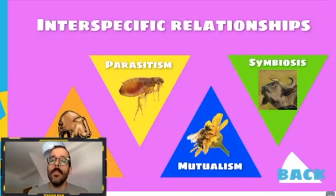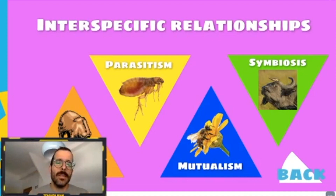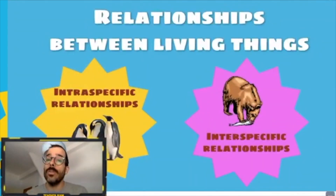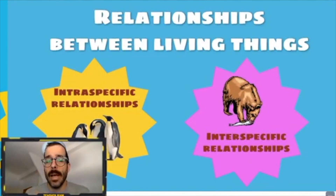So we have two equal relationships — symbiosis and mutualism — and two unequal relationships — parasitism and predation. These are the interspecific relationships; please study them. We are ending this unit and soon we will need to show what we have learned. If you have any problems, just write me an email. Thank you very much — see you, bye bye!